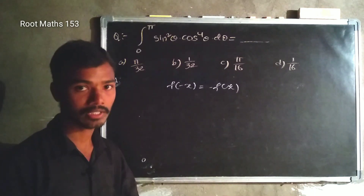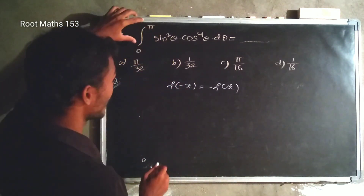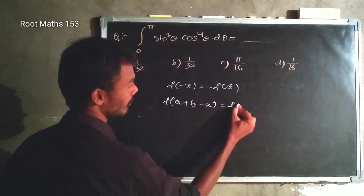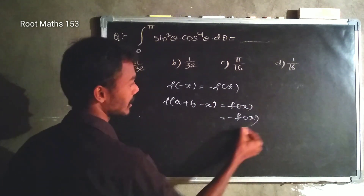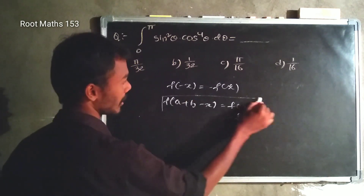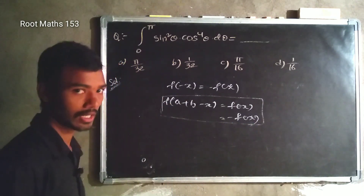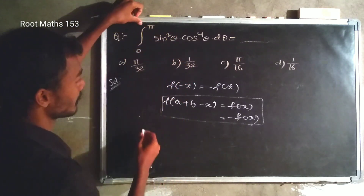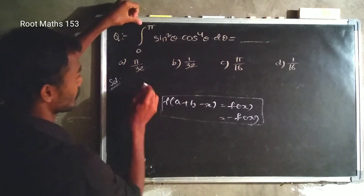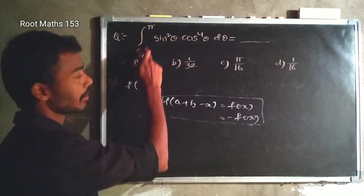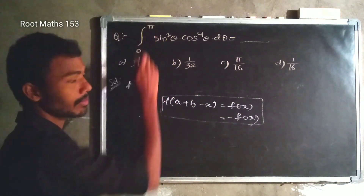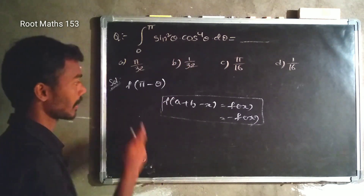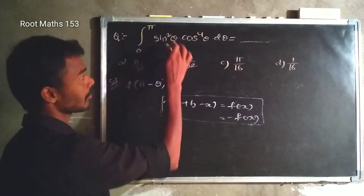Check: f of minus x equals minus f of x. Now check f of a plus b minus x. Here a is the lower limit and b is the upper limit. So 0 plus pi equals pi, and pi minus theta is substituted for theta.